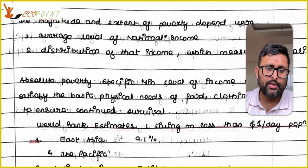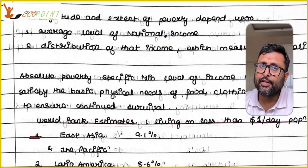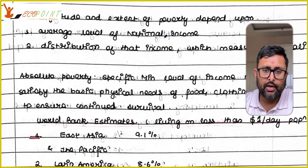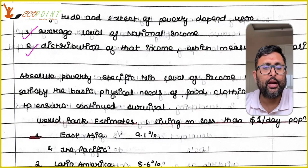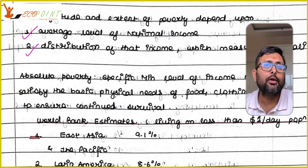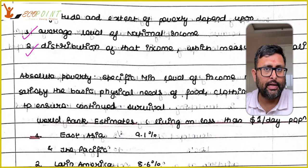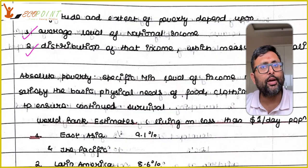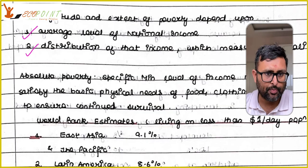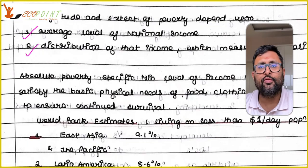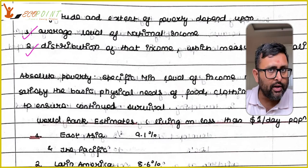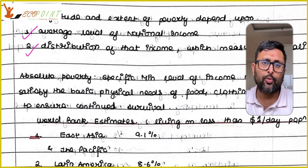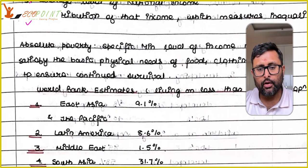Todaro and Smith say that the magnitude and extent of poverty depend on two things: the average level of national income, and the distribution of income, which measures inequality. You need to look at what people are earning on average in a country and how that income is distributed — whether equally or with a lot of inequality.